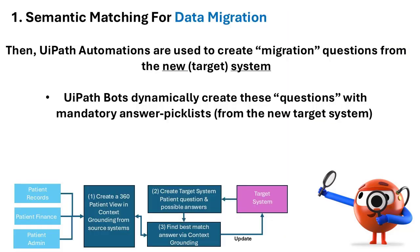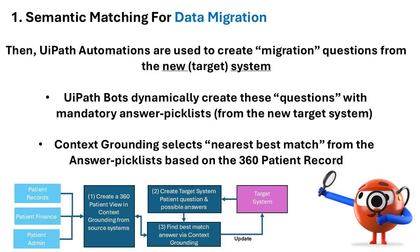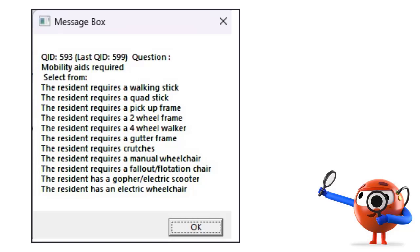Next, UiPath automations are used to create migration questions from the target system. UiPath bots dynamically create these questions with any mandatory answer picklists. Context grounding then selects the nearest best match from the picklist based on the 360 patient record.